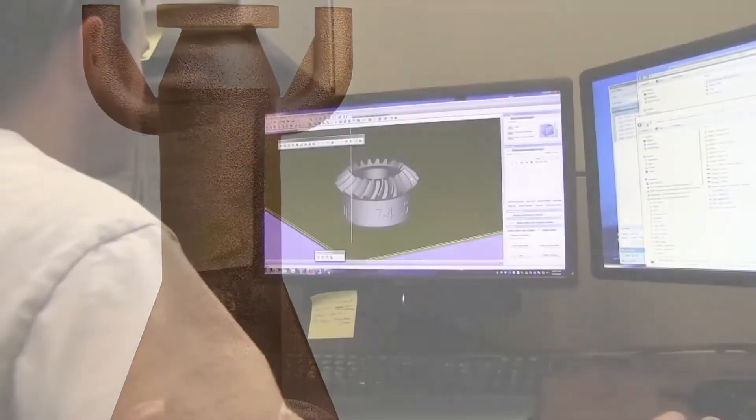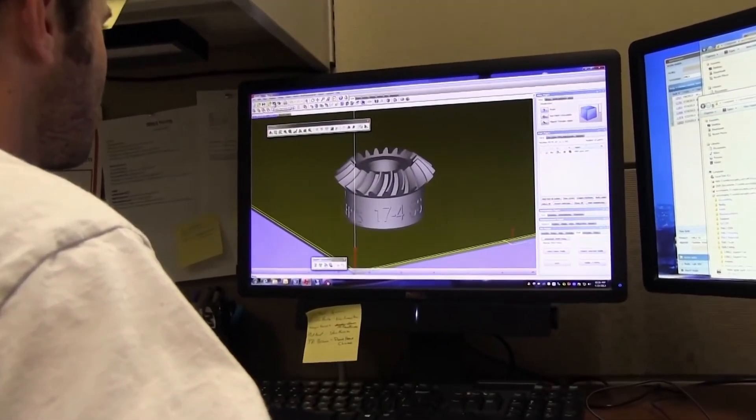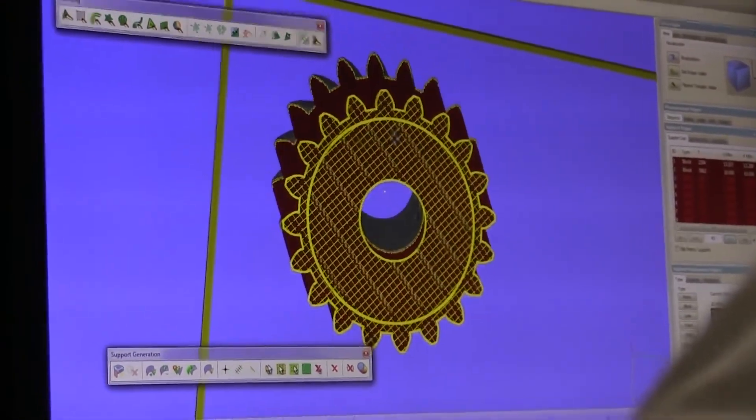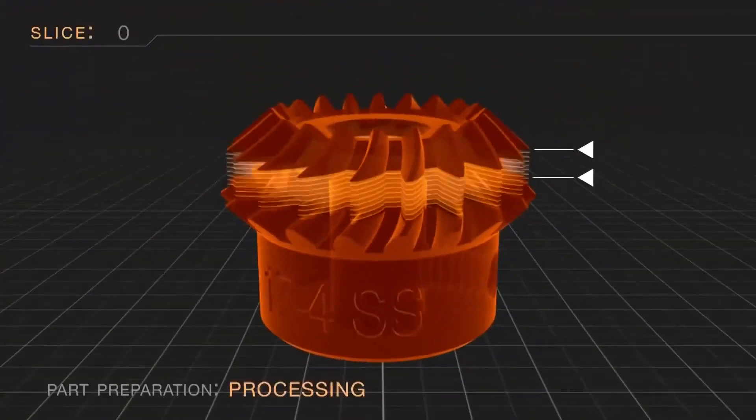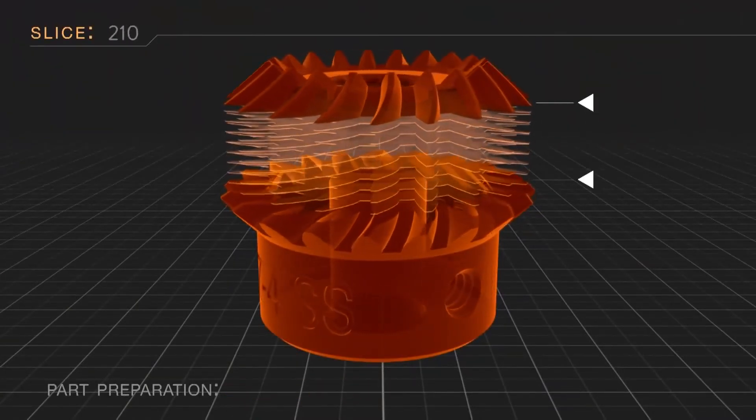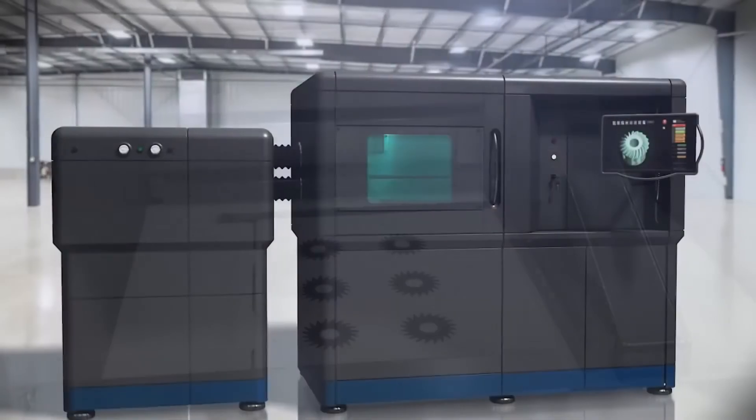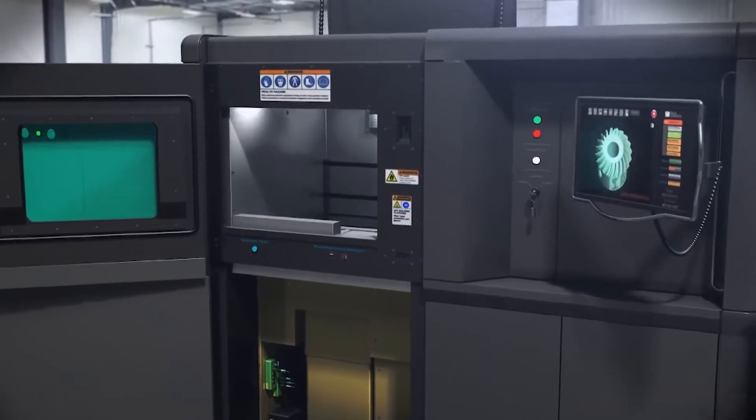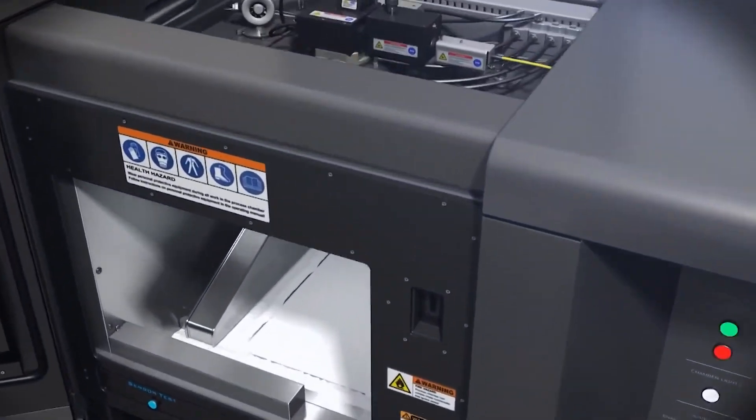The DMLS process begins in the same fashion as other layer additive manufacturing technologies. A program takes 3D CAD data and mathematically slices it into 2D cross sections. Each of these sections will act as a blueprint telling the DMLS machine exactly where to sinter the metal material. The data is then transferred to the DMLS equipment.